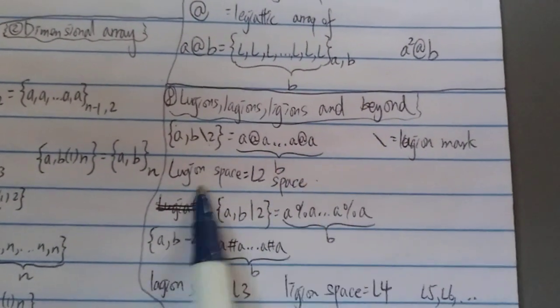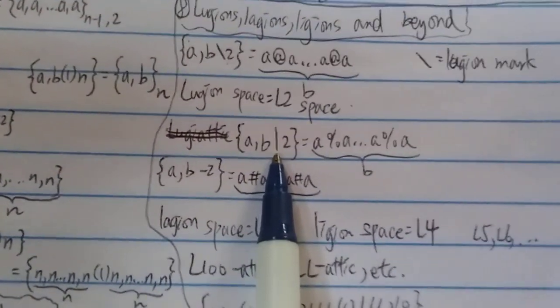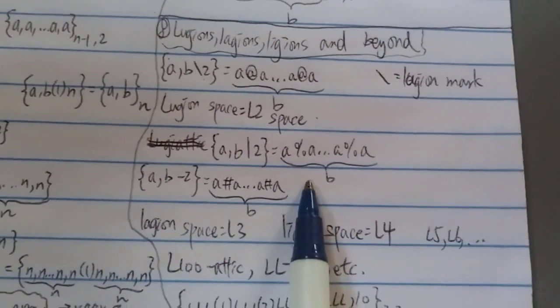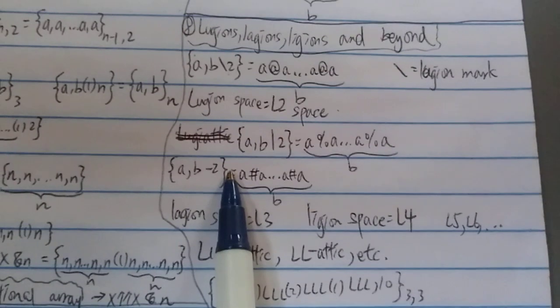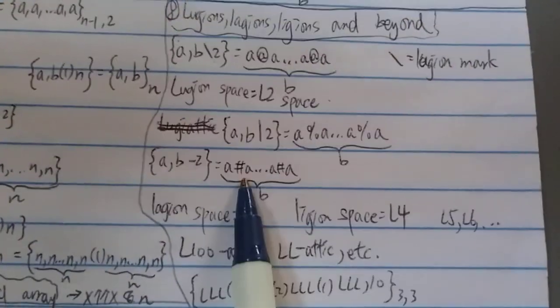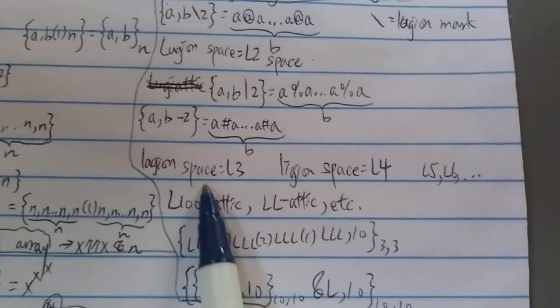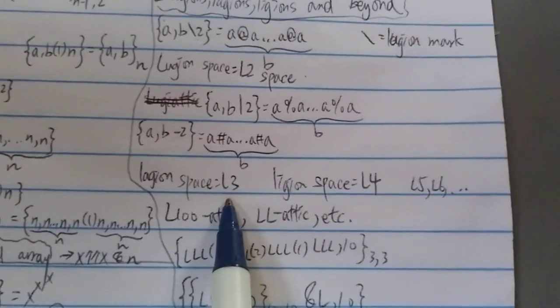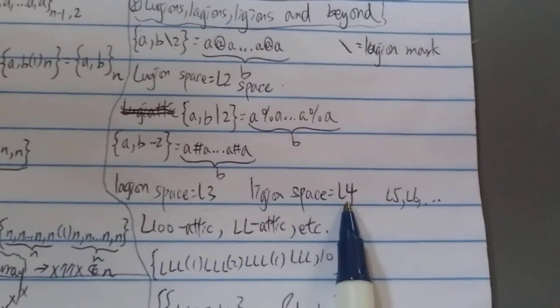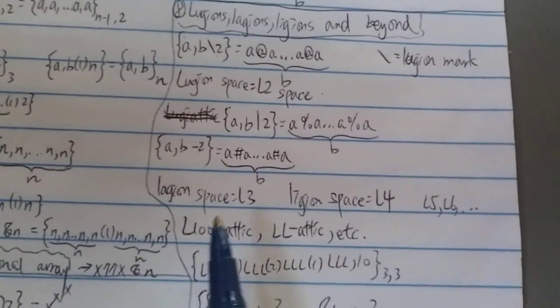You can introduce a new operator: a % a % a...with b number of a's. Then another new operator — this is not minus, just a new notation — a # a # a with b number of a's. You have the 'laggen space' which is L3, then L4, L5, L6, L7, even L100. This looks familiar because there is an L100 in our target number — this is where it came from.